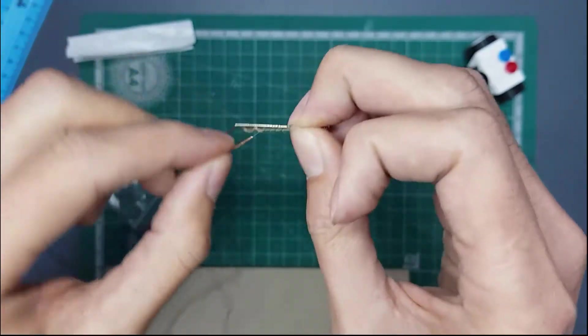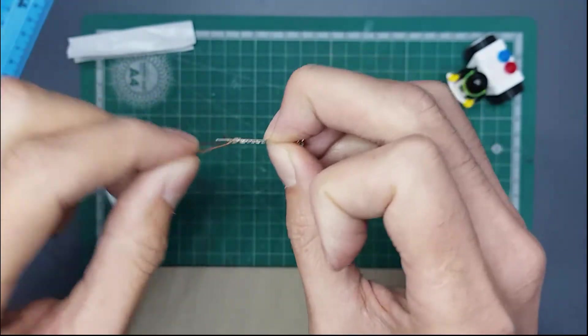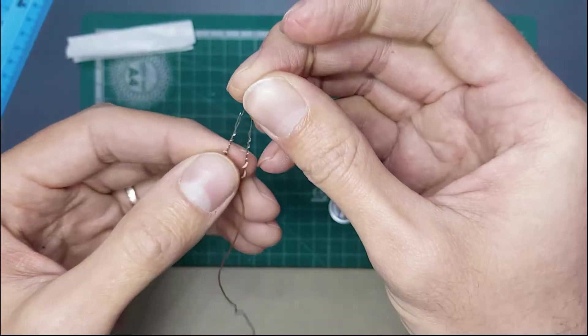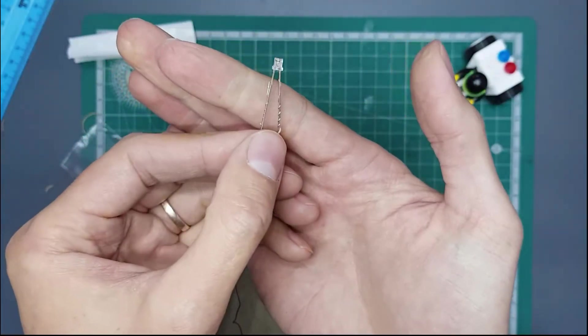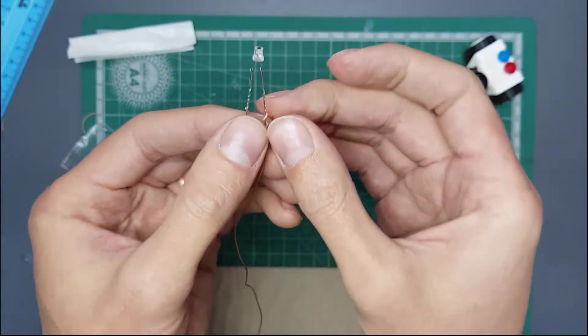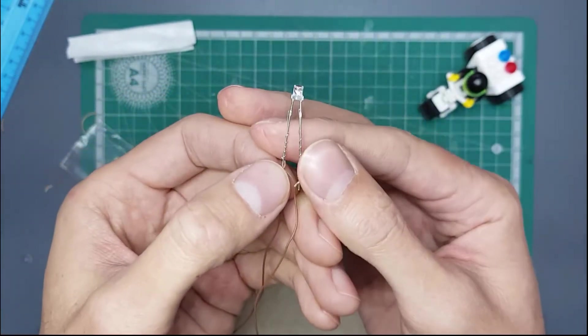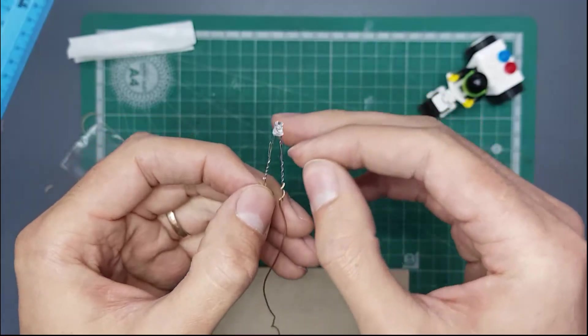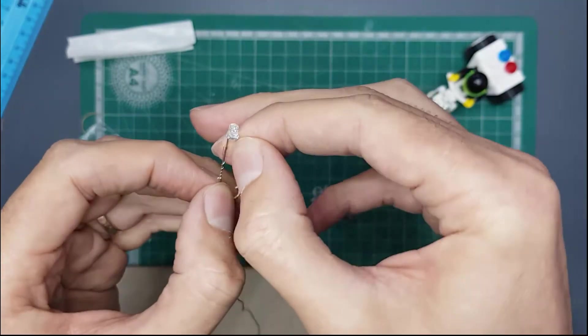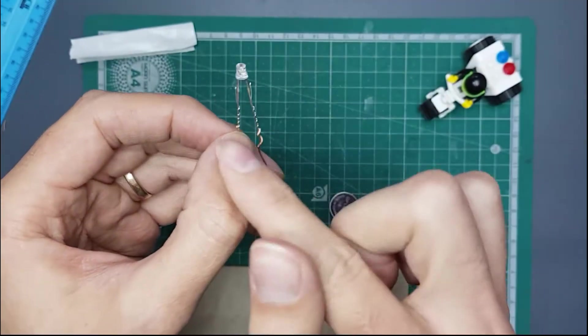You just have to remember which was the long leg and which is the short leg, so we can get the polarization right later. If we do that, you've got your two wires wrapped nicely on there. It's not soldered on, but it's got enough surface area to make good contact.